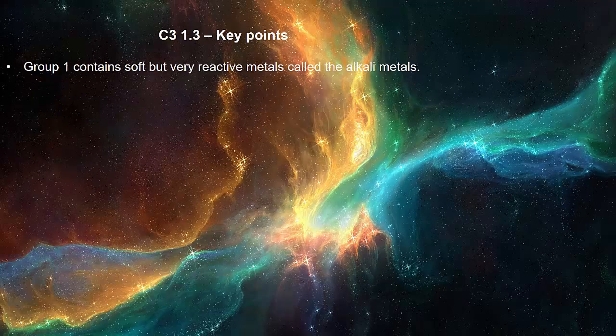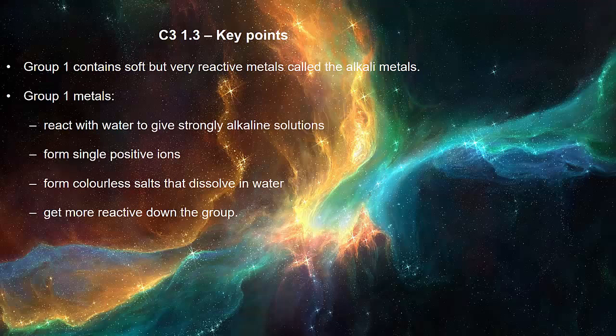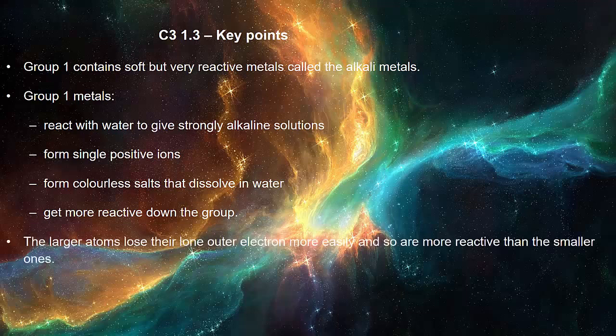Group 1 contains soft but very reactive metals called alkali metals. Group 1 metals react with water to give strongly alkaline solutions, form single positive ions, form colourless salts that dissolve in water and get more reactive down the group. The larger atoms lose their lone outer electron more easily and so are more reactive than the smaller ones.